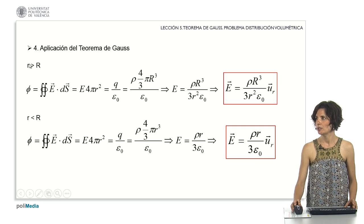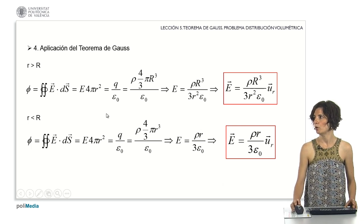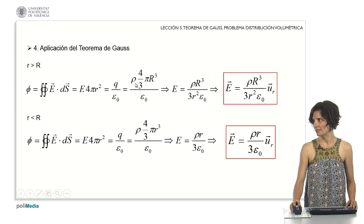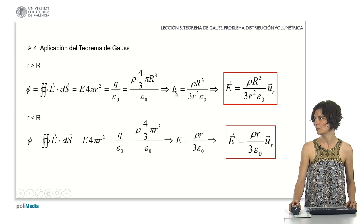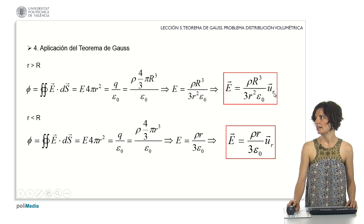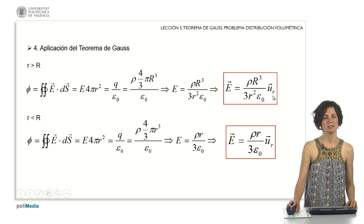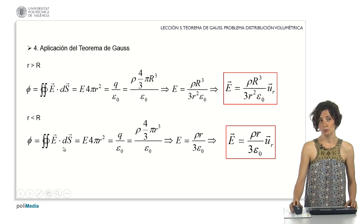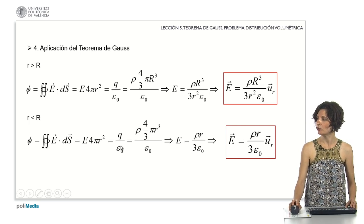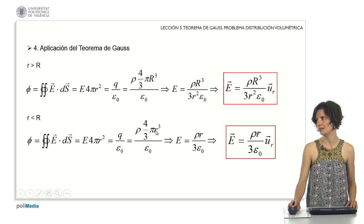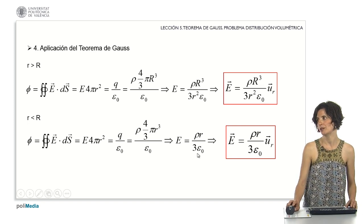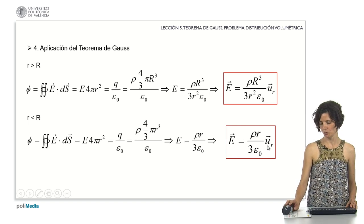We now apply Gauss's law to both zones. In the outer zone, the flux E times 4πr² equals the enclosed charge divided by epsilon sub-zero, giving us the expression for the electric field modulus shown on screen. To add the vector character, we multiply by the unit vector u_r, which has modulus 1 and is radial. In the inner zone, the flux is the same, E times 4πr², but the enclosed charge is rho times (4/3)π times r³. Clearing the electric field gives rho times r divided by 3·epsilon sub-zero, multiplied by u_r for vector character.